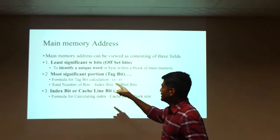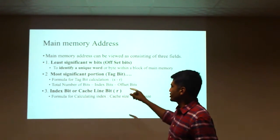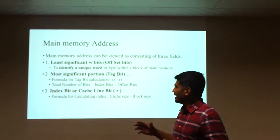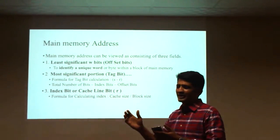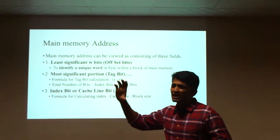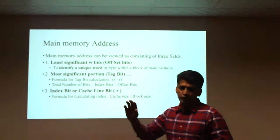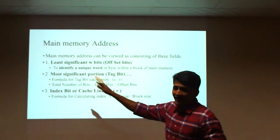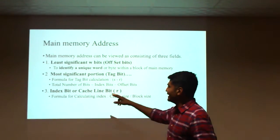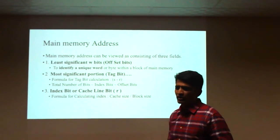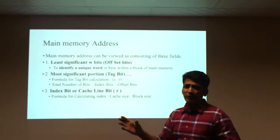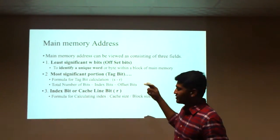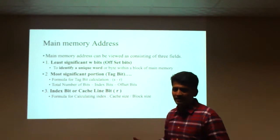The tag bit is the most significant portion of the address — it identifies which block contains the particular data. The index bit represents the cache line, indicating how many lines are required to represent the cache. So the three components are: offset bit, tag bit, and index bit.